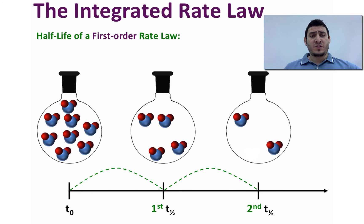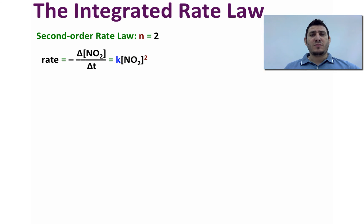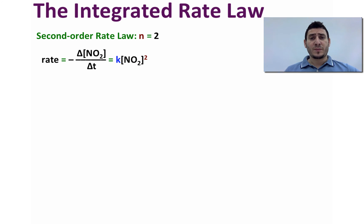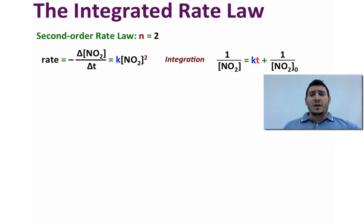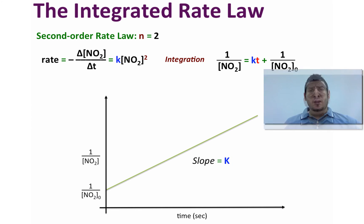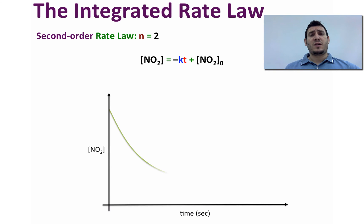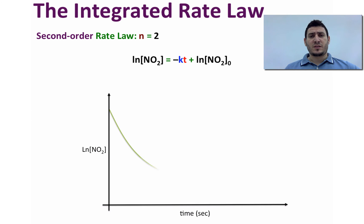Now let's discuss the second-order rate law where n = 2. The differential rate law is: rate = k × [NO₂]². Integration gives us: 1/[NO₂] = kt + 1/[NO₂]₀. Plotting 1/[NO₂] versus time gives an ascending straight line where the slope equals k and the y-intercept equals 1/[NO₂]₀. Note that plotting [NO₂] versus time or ln[NO₂] versus time would not give a straight line.